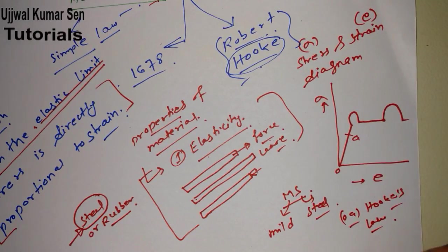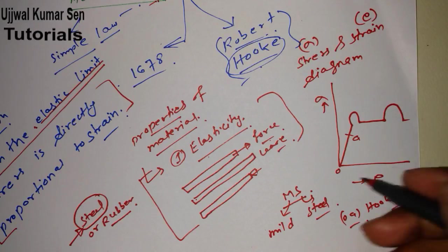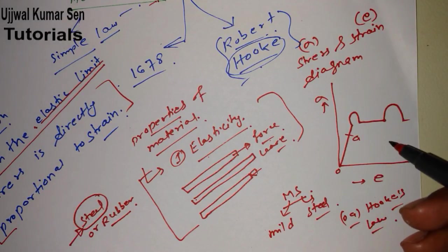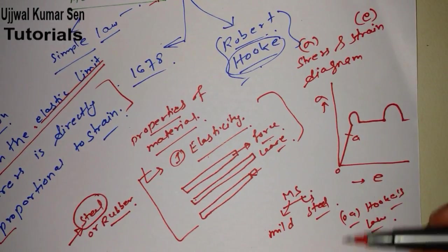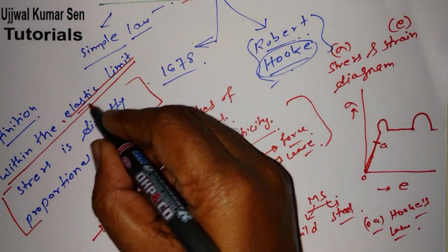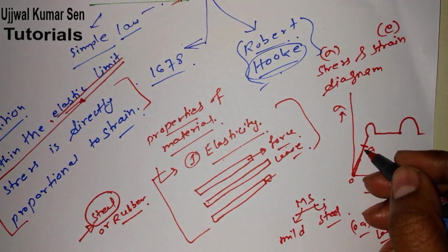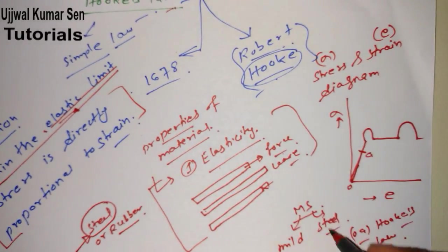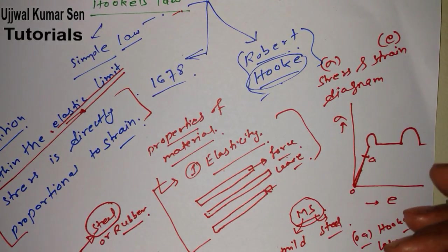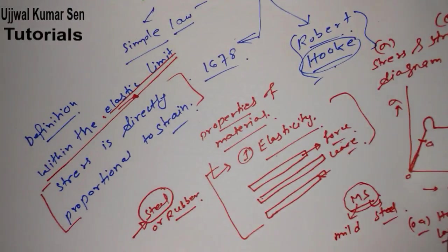From point O to point A on the stress-strain diagram, Hooke's Law is valid. After point A, the properties keep changing and Hooke's Law is no longer valid. So if we want to apply Hooke's Law for any material, the stress and strain must be within the O to A region — that is the elastic limit.